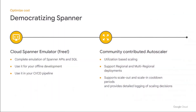And last but not the least on the cost front for Democratization of Spanner: we have a free local emulator which you can use for unit tests and CI/CD pipelines. We also have a community-contributed autoscaler, which a lot of our customers are using — it can automatically scale up and down your workloads. It has flexible deployment models depending on your choice.